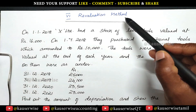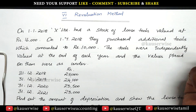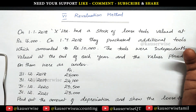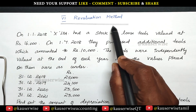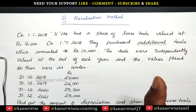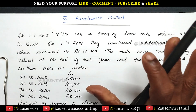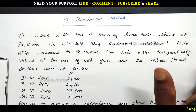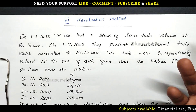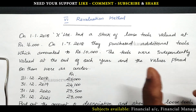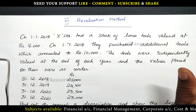This revaluation method is applicable for assets like bottles, packages, copyrights, patents, loose tools, etc. For such assets, the revaluation method is the best method to find out the depreciation. Here the depreciation value is calculated based on the difference between the book value at the beginning and book value at the end of the year. Every year they revise the value of assets, and if they find any difference between beginning value and end value, that difference is called depreciation.